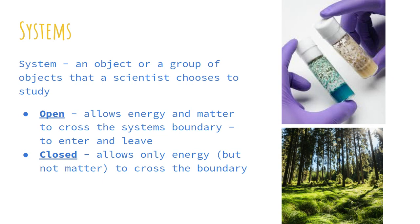A closed system allows for the movement of energy, like sun coming in and the creation of photosynthesis and stuff like that. But anything that is living in that system, such as bugs or anything like that, can't leave the system. This vial right here of us growing fruit flies is an example of a closed system — things cannot leave that system.